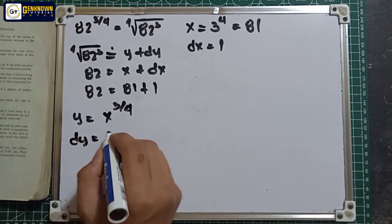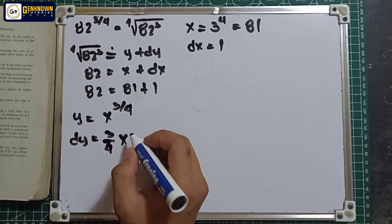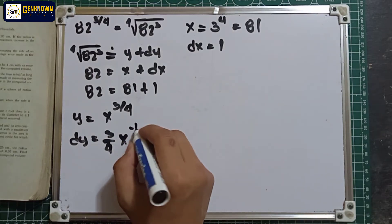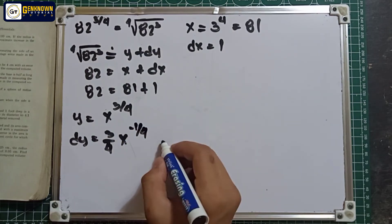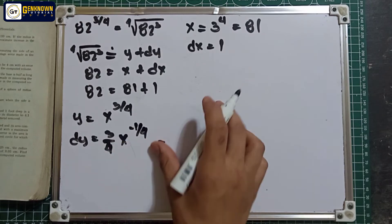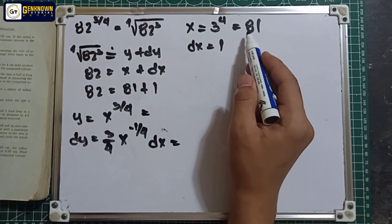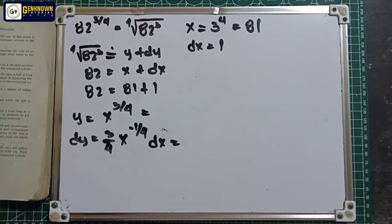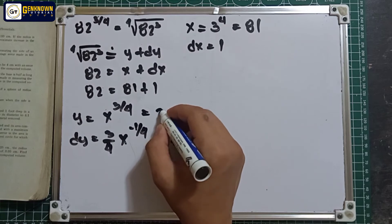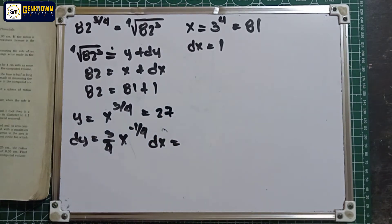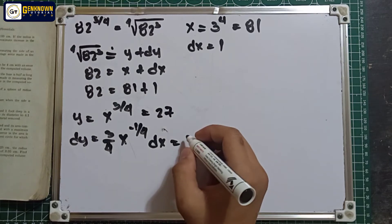So dy equals (3/4) times x raised to negative 1/4, multiplied by dx. Substituting: y equals 81 raised to 3/4 equals 27, and dy equals (3/4) times 81 raised to negative 1/4 times 1, which equals 1/4.